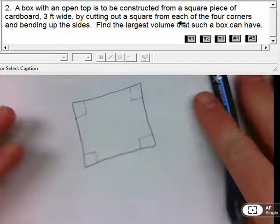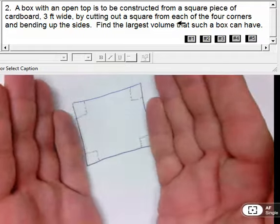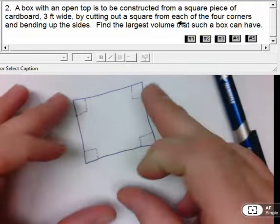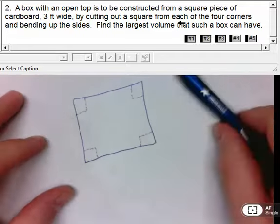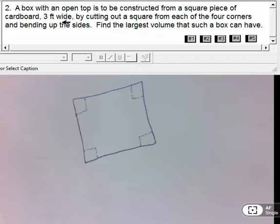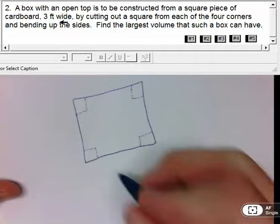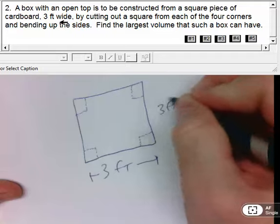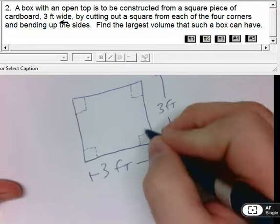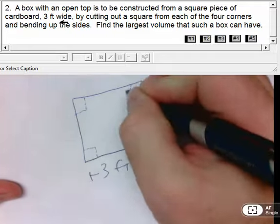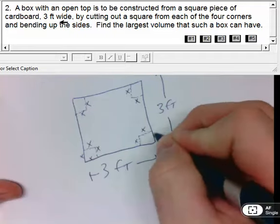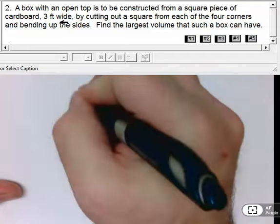So we're going to cut out those corners, and then the sides will fold up. You'll have a box with an open top. The square is three feet wide, so these are all three feet. We're cutting out these pieces that we don't know, so those are just X. These are all X because these are all squares.